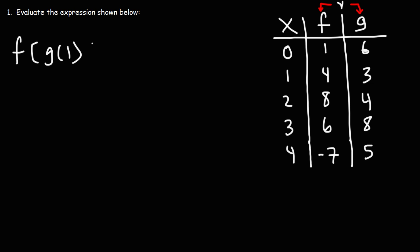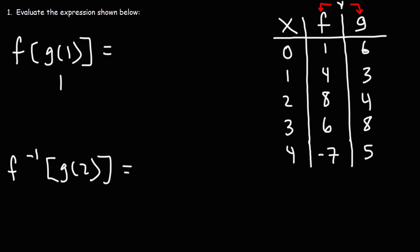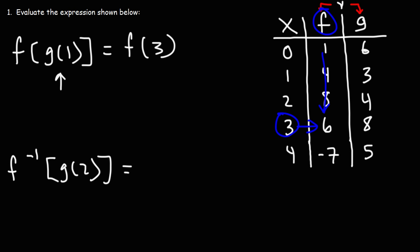Let's move on to composite functions. Find the value of f of g of 1. So let's work on the inside first: g of 1. We're looking for the y value — here's g, here's 1, the y value is 3. So now we're looking for f of 3. Here's f, here's 3, the y value is 6. So f of g of 1 is 6.